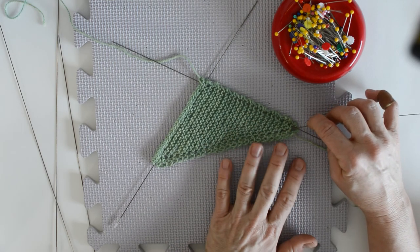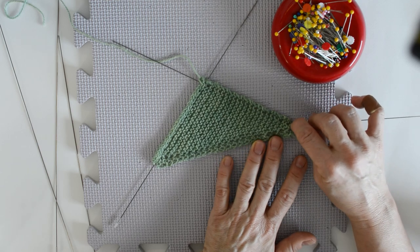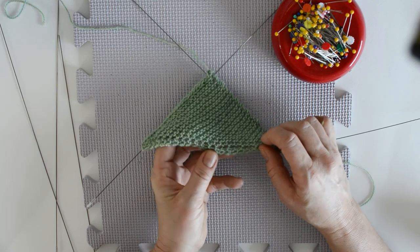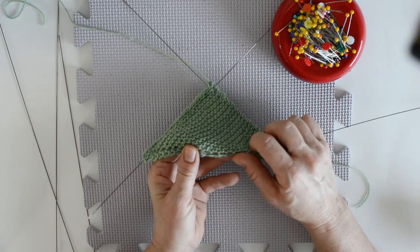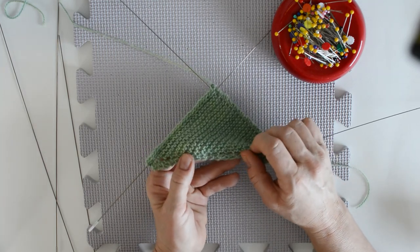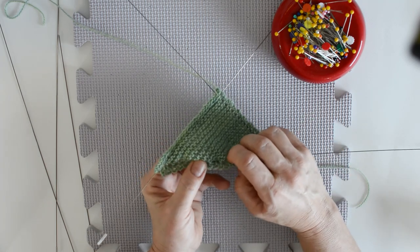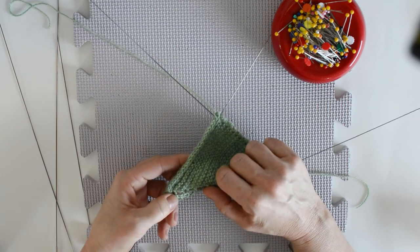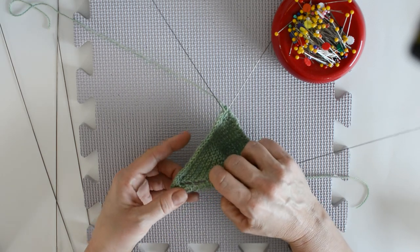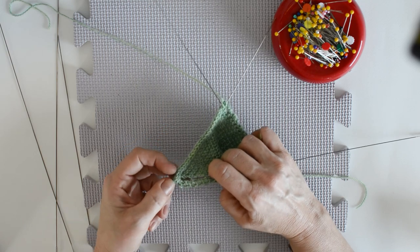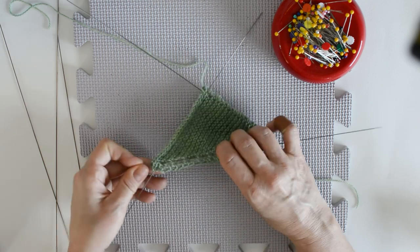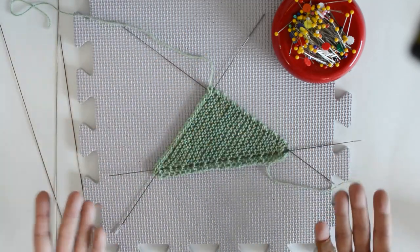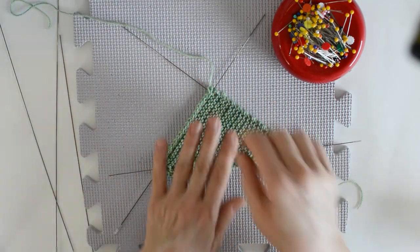So in and out, weaving in and out of those eyelets. You can see how much more quickly this is going than the other two sides. And there we are, we're done. I'm also going to stick that, poke it right through that I cord bind off. So there we have three wires in our three sides of our triangle.